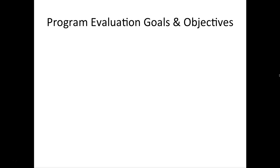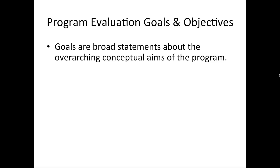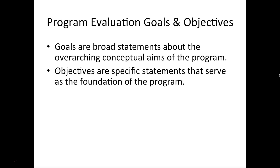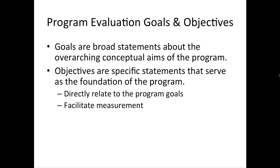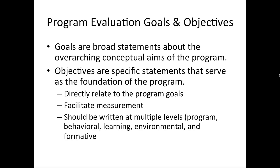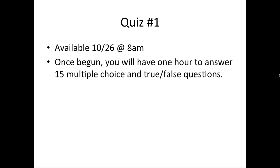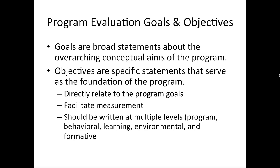Your book has a nice section about laying out goals and objectives. Goals are broad statements about the overarching conceptual aims of the program — your book talks about these as what we use as the face for people who don't speak research language, perhaps the PR component. Objectives are specific statements that serve as the foundation of the program. These objectives should directly relate to program goals, facilitate measurement by being specific enough that we can determine if we've met them, and be written at multiple levels — program objectives, behavioral objectives, learning objectives, environmental objectives, and informational objectives.